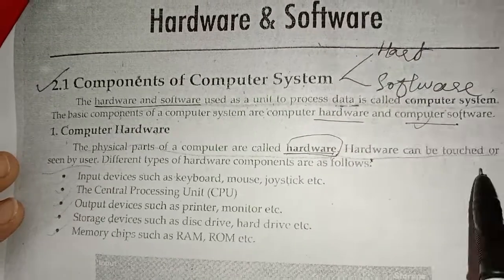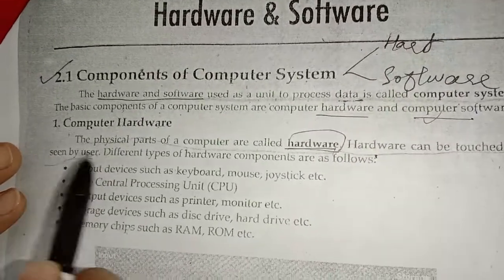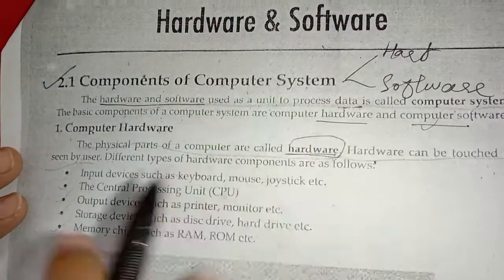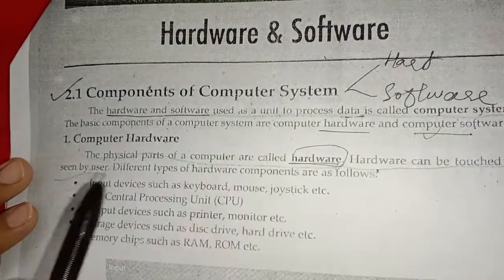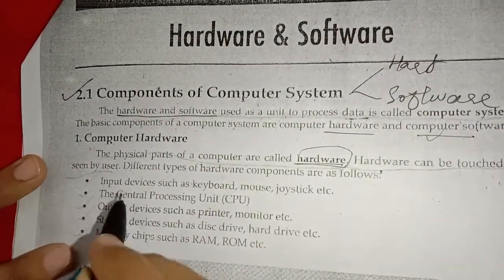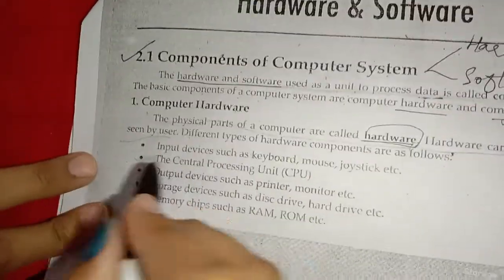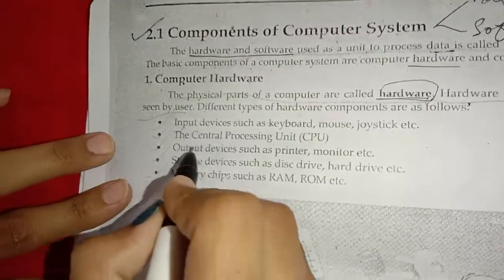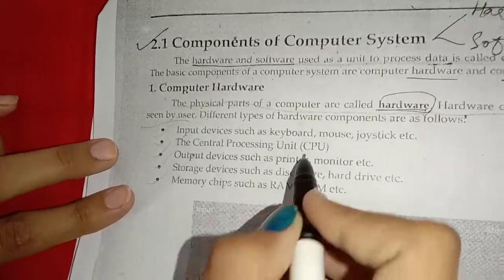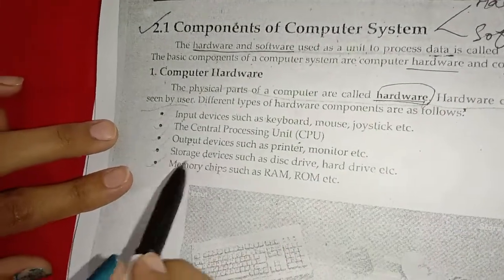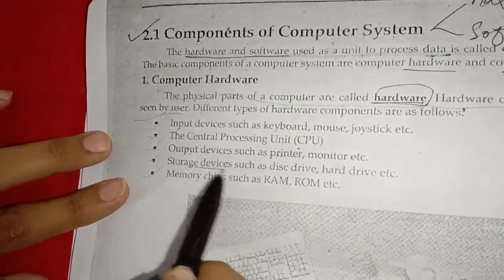Hardware can be touched and seen by users. There are different types of hardware. The types of hardware are: input device, central processing unit (CPU), and output device.